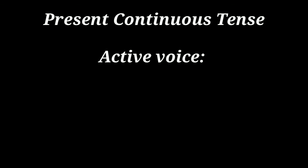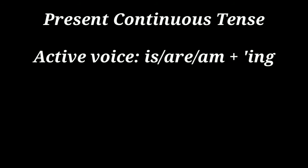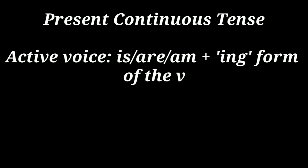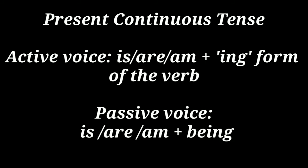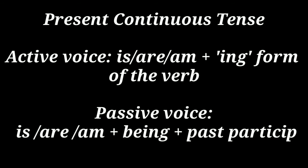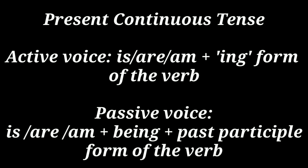In present continuous tense, in active voice we write 'is,' 'are,' or 'am' and the -ing form of the verb — for example, 'is writing.' In passive voice we write 'is,' 'are,' or 'am' plus 'being' plus the past participle form of the verb — 'is being written.' For example: 'Reetha is writing a story' in active becomes 'A story is being written by Reetha' in passive.